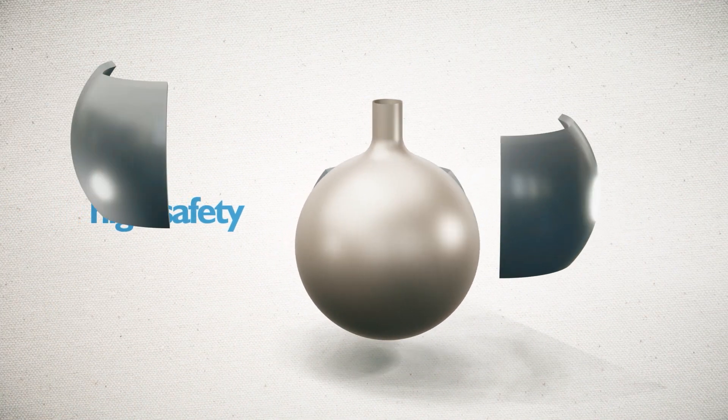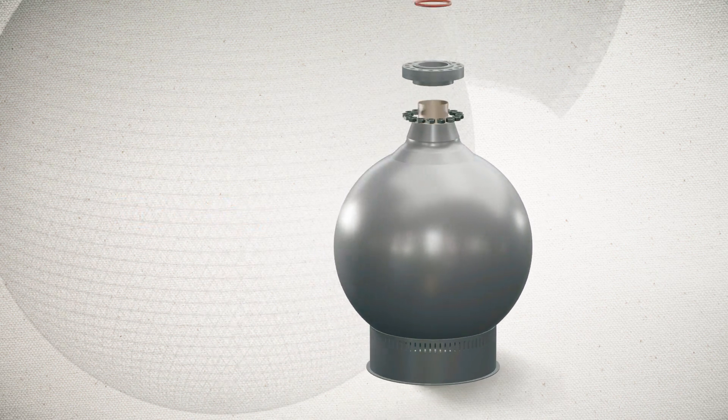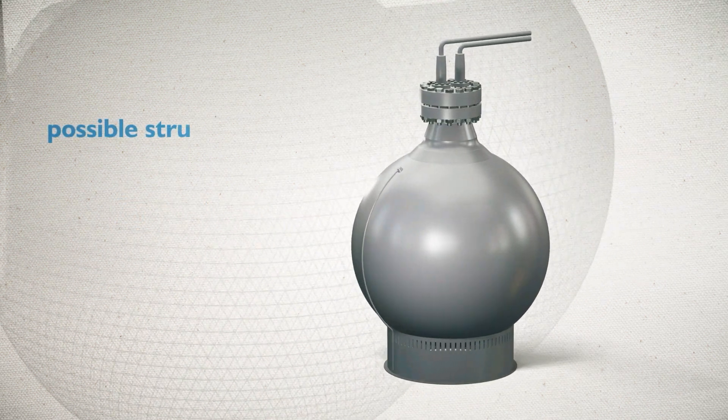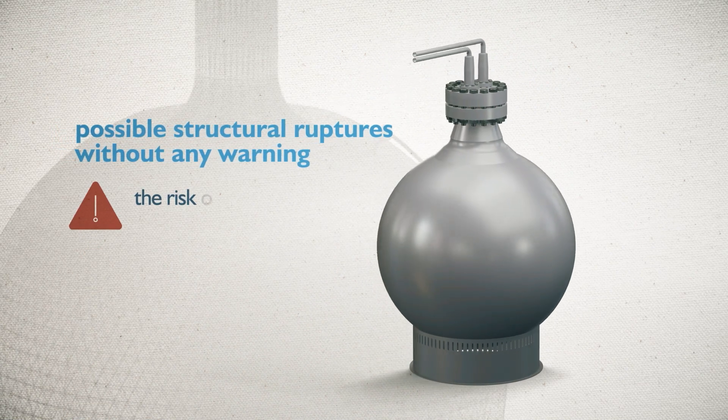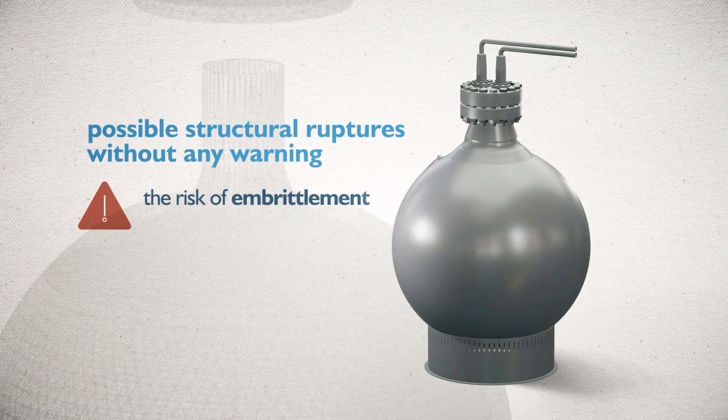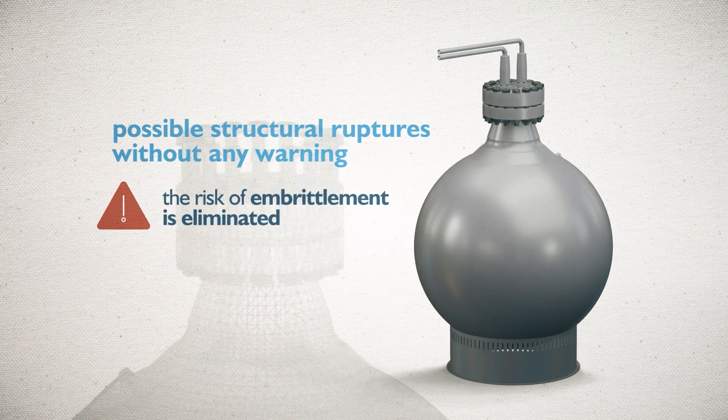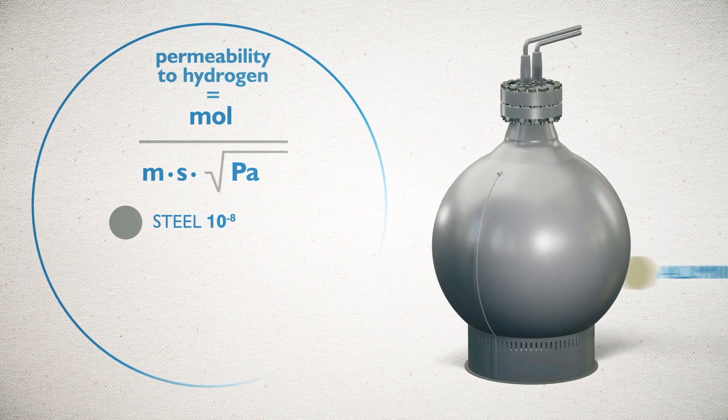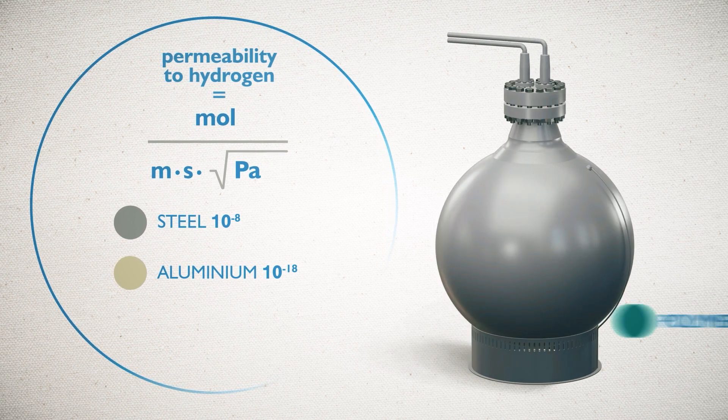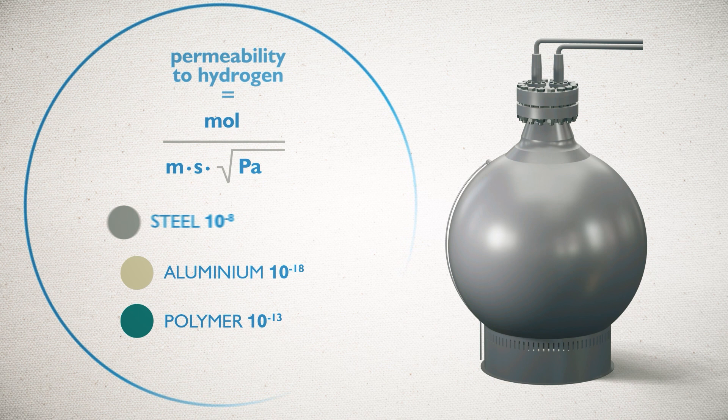Sphero addresses one of the main problems related to high pressure hydrogen storage, possible structural ruptures without any warning. The risk of embrittlement linked to the molecular structure of the tank and the composition is eliminated. Homogenized high strand steel, 5000 series aluminium and polymer layer increase Sphero's resistance to hydrogen.